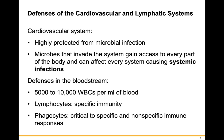One major issue with infections in both the lymphatic and cardiovascular systems is that they are both systemic, meaning infections could spread throughout the entire body. The cardiovascular system is highly protected from microbial infection, but microbes that invade it gain access to every part of the body. Defenses in the bloodstream include about 5,000 to 10,000 white blood cells per milliliter, including lymphocytes involved in specific immunity and phagocytic cells critical to both specific and nonspecific immune defenses.